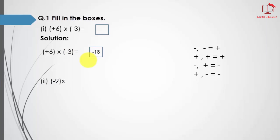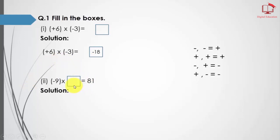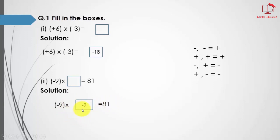Part number 2: here you can see the answer is 81 and we have to fill the box. If we multiply 9 by 9 we get 81, and minus times minus equals plus.